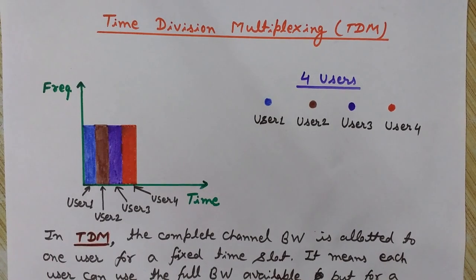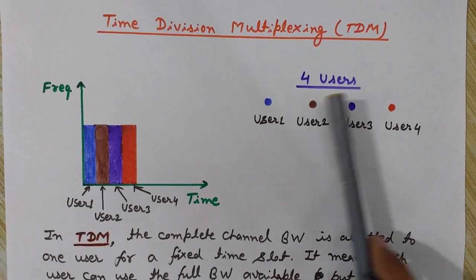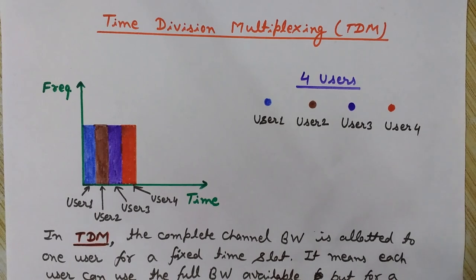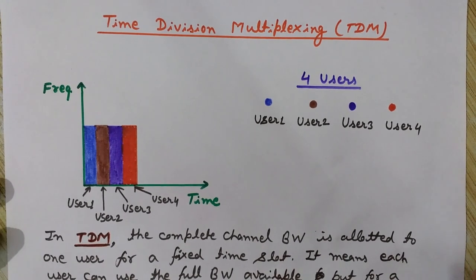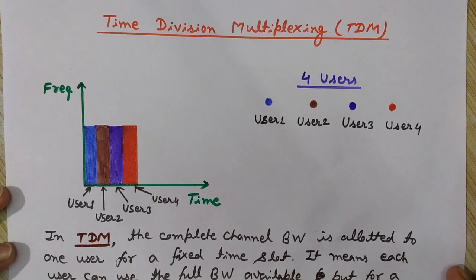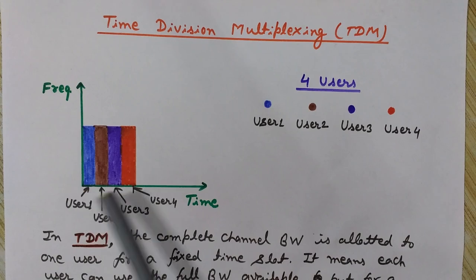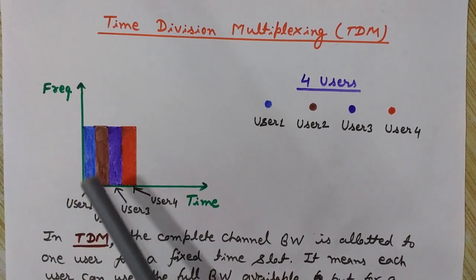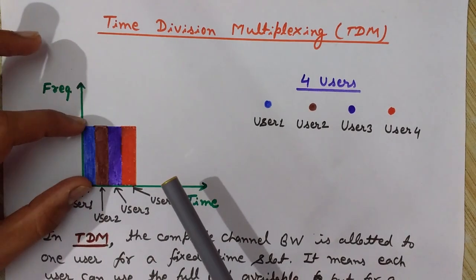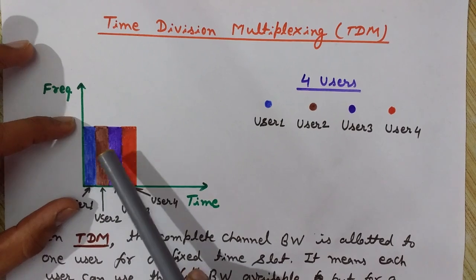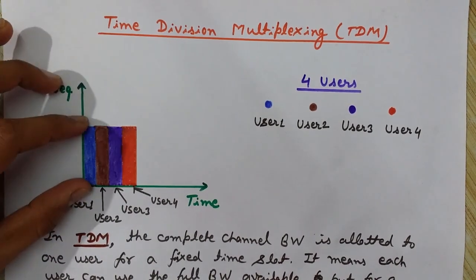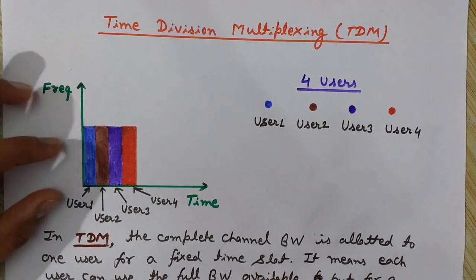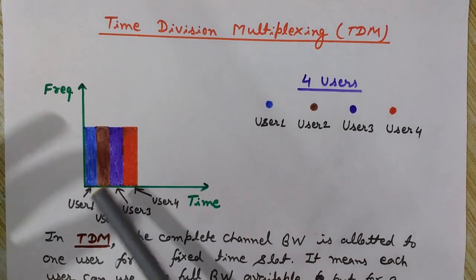Now we will discuss time division multiplexing (TDM) using the same example of four users who want to transmit their signals simultaneously over a common channel. In TDM, the full frequency bandwidth is allotted to each user — unlike FDM where only a certain bandwidth was allocated to each user.